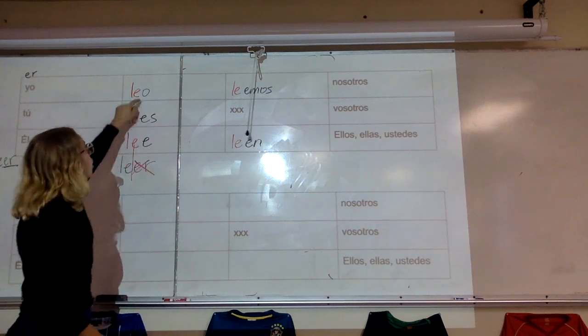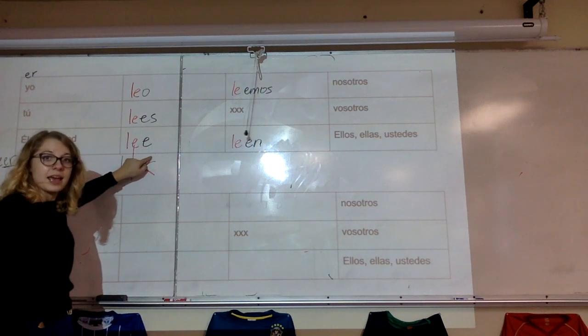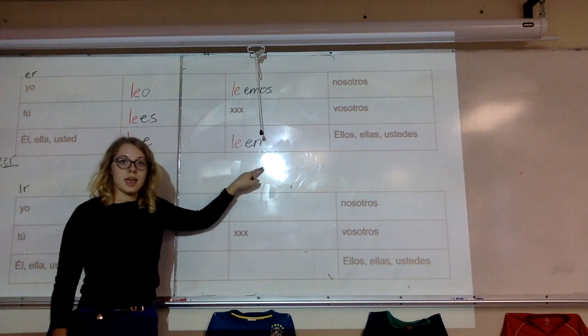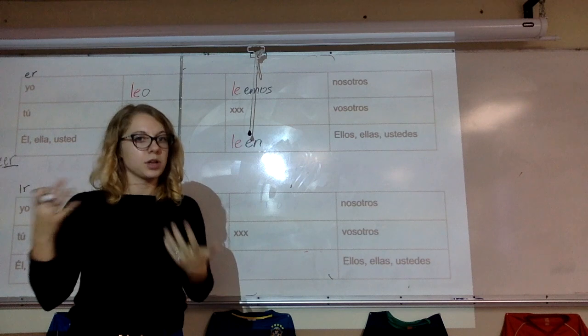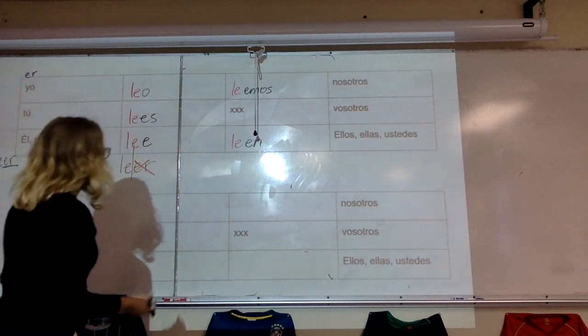Notice what I have. I have o, es, e, emos, en. And depending on who's my subject, I change the verb to match that subject. That's what a conjugation is, really.